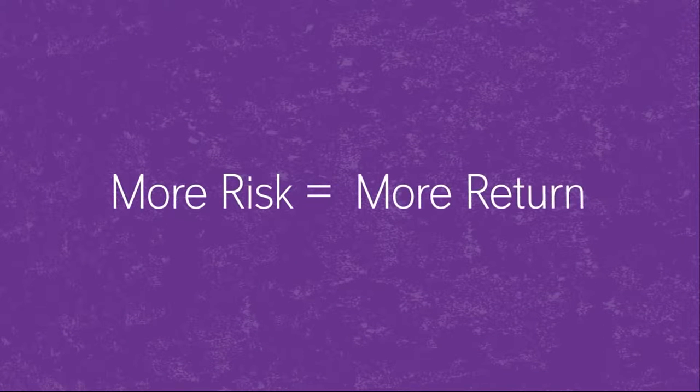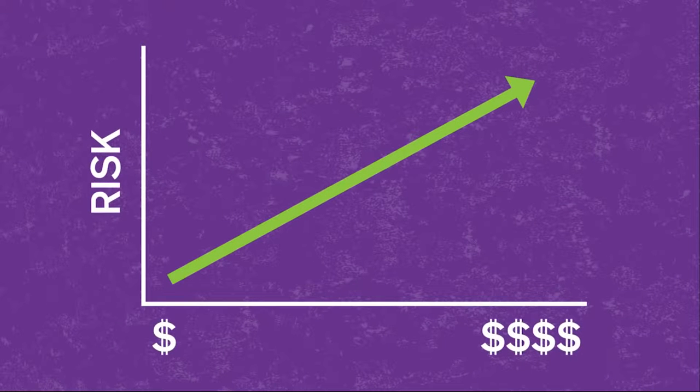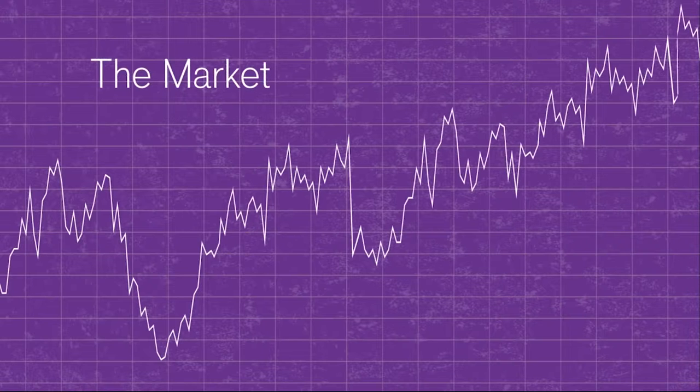So, how do you do it right? Most of us understand that if we take more risk, we expect more return. Let's look at the math. The line shows us that for any given level of risk, we can expect a certain rate of return. More risk, more return. The challenge, as you may be aware, is that markets don't move in a straight line. They go up and down.